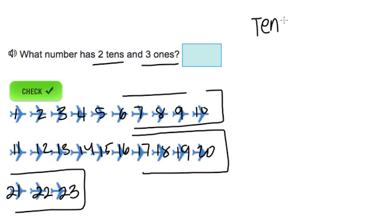So our ones place is always all the way to the right, and then to the left of our ones place is always our tens place. So how many ones do we have? We have three ones.